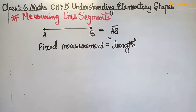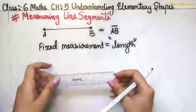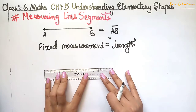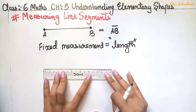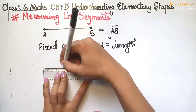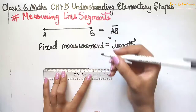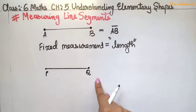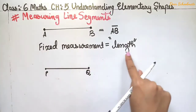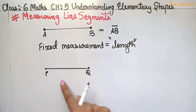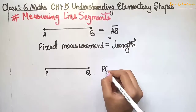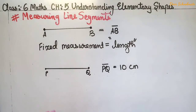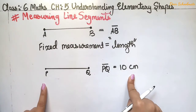We can draw a line segment using centimeters. We will use a scale to make a line segment — for example, a line segment of 6 centimeters. Here we start from 0 and stretch to 10 — this is our line segment called PQ.